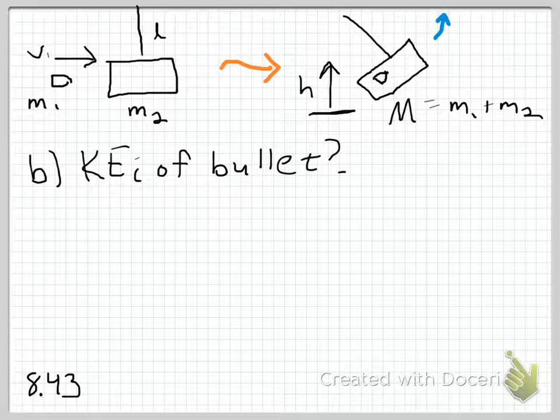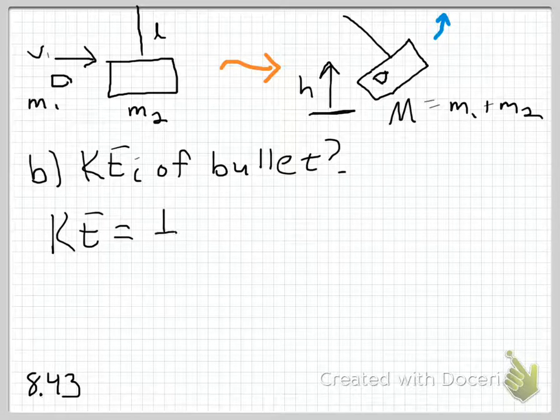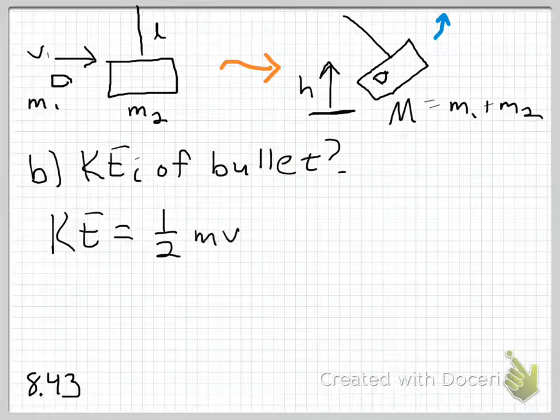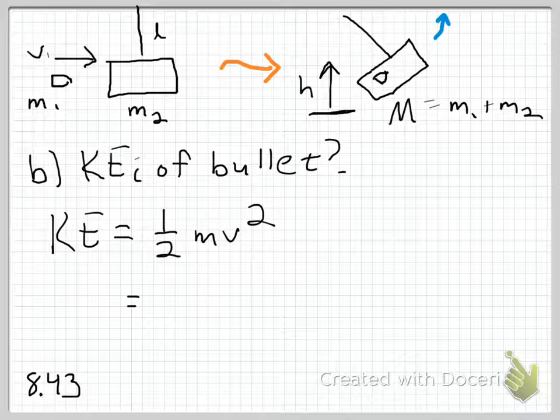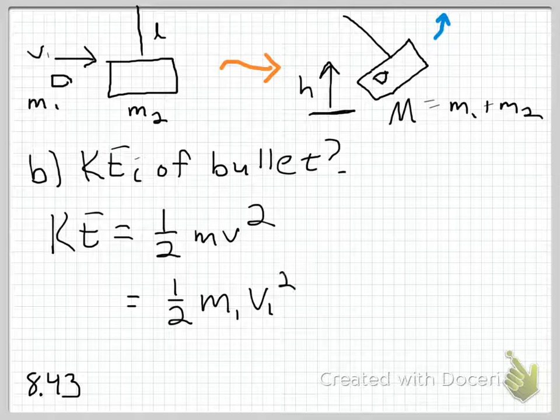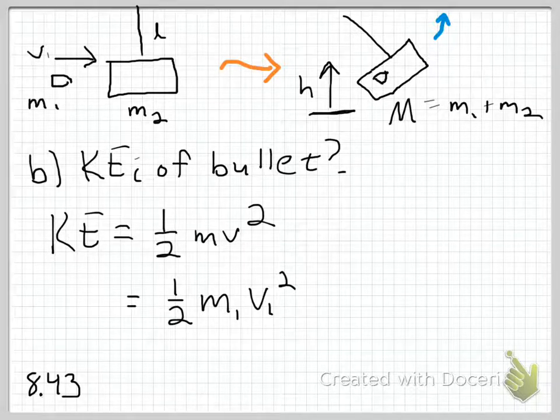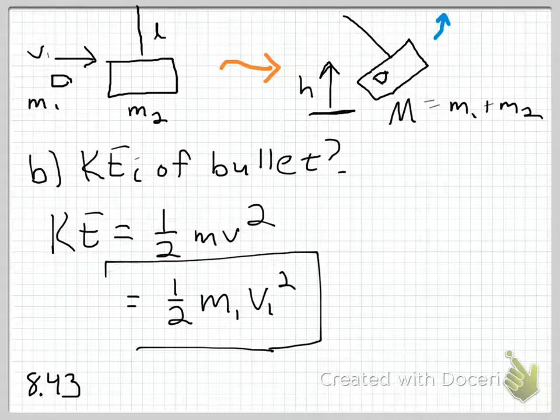Part B asks for initial kinetic energy of the bullet. This is really easy. You have, just from the definition of kinetic energy, KE equals one half M1 V1 squared. We're given the mass of the bullet and the initial velocity, so you can plug in numbers and get an answer. No big deal.